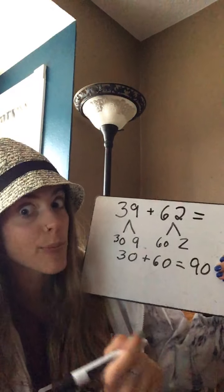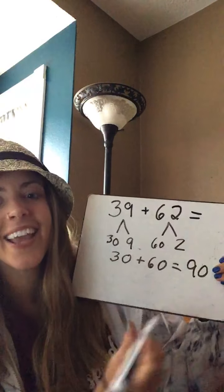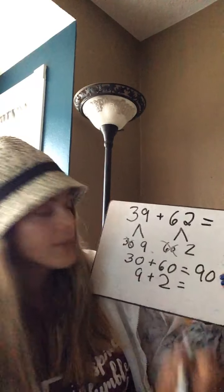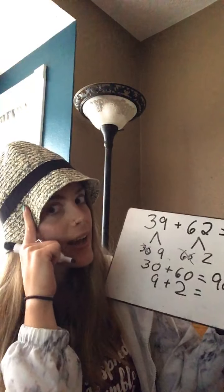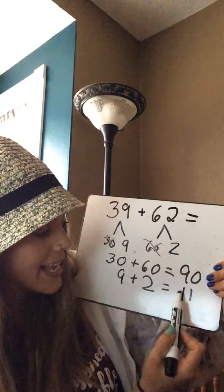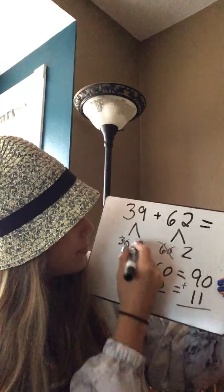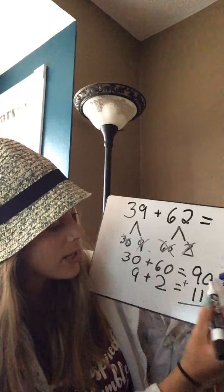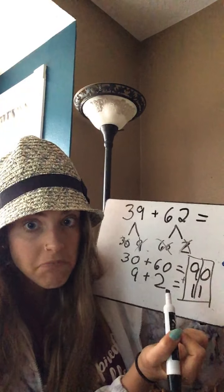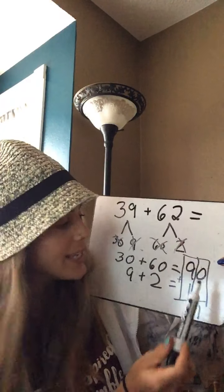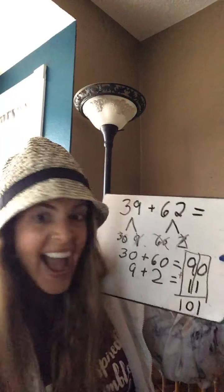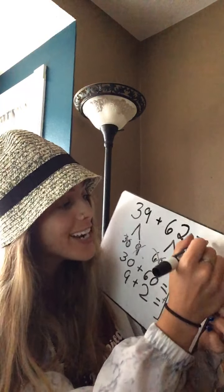Those math patterns really help us out — that's why we practice them all the time. Now let's add our ones: nine and two. Nine plus two: nine, 10, 11. Now look — I lined up my ones and my tens. How many in the ones place? Zero and one, so that is one. How many in the tens place? Nine plus one, which is 10. We got a big answer: 101! That might be one of the biggest problems we've ever solved.